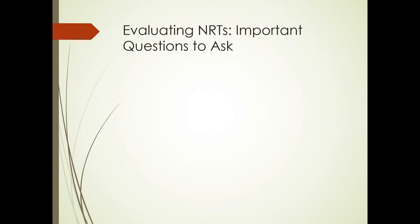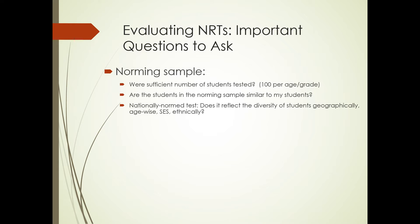Now let's talk about the important questions you need to ask in evaluating these norm reference tests. You first want to know whether the norming sample was sufficient in order to claim what they claim. You generally want to see about 100 students per age or grade being tested. You also want to know whether the students in the norming sample are similar to your students. And the best test of that is to see whether it's nationally normed and reflects the diversity of students geographically, age-wise, SCS, ethnically.